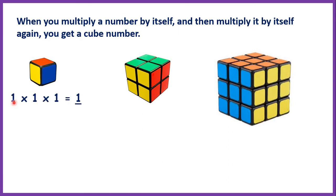So, 1 times 1 times 1 is 1. 2 times 2 times 2 is 8 because 2 times 2 is 4 and then 4 times 2 is 8. And 3 times 3 times 3 is 27 because 3 times 3 is 9 and then 9 times 3 is 27.